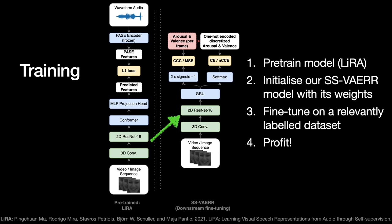We predict arousal and valence per frame, although it can also be done per video. We also predict one-hot encoded, discretized versions of arousal and valence. We do this for a composite loss that makes model training a little more stable and leads to better results. After we initialize the weights and fine-tune on the downstream dataset, the model is ready and can be used.